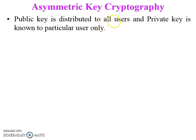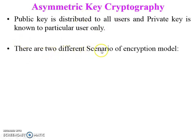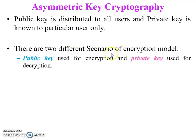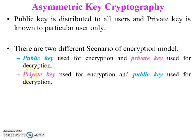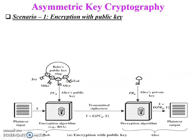Plain text is the original message or data fed into the algorithm as input — the message the sender wants to send to the receiver. The encryption algorithm performs various transformations on the plain text; its input is the plain text and a key (either public or private key), and its output is ciphertext.